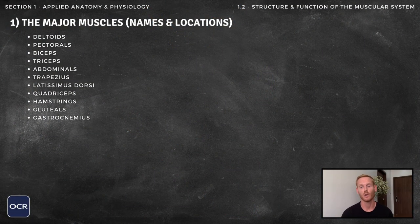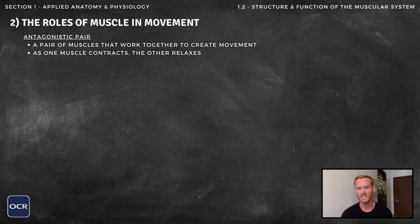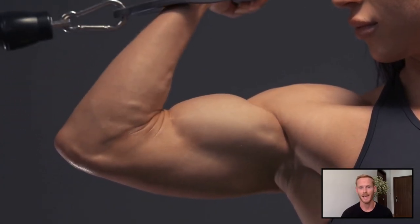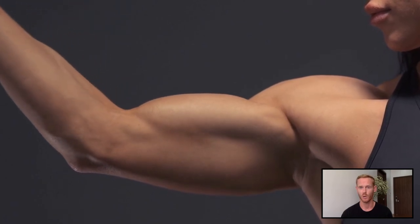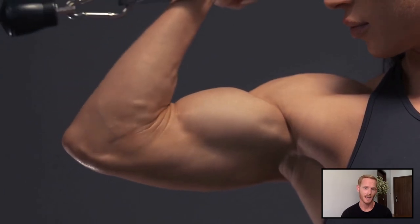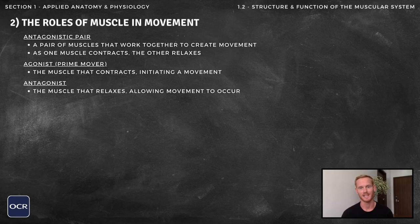So that's everything you need to know on the major muscles. We'll move on now to the second and final section on topic 1.2: the roles of muscle in movement. Since muscles can only pull, but not push on bones, muscles must work in pairs to ensure that movement in both directions is possible. A pair of muscles that work together is known as an antagonistic pair. As one muscle contracts or produces force, the other relaxes to allow the movement to occur. Within an antagonistic pair, the two muscle groups are classified according to their roles. The muscle that contracts to initiate the movement is known as the agonist or prime mover, while the muscle that relaxes is known as the antagonist.